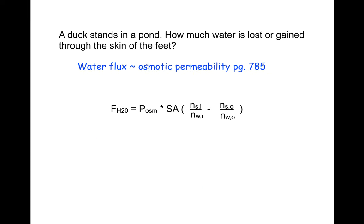Those are some of the ways osmotic regulation and excretion are regulated. In the last part of the homework — the design problem — there's a question about how much osmotic flux occurs through the skin. We have a duck standing in a pond and want to know how much water is lost or gained through the skin of the feet, since it's standing in fresh water.